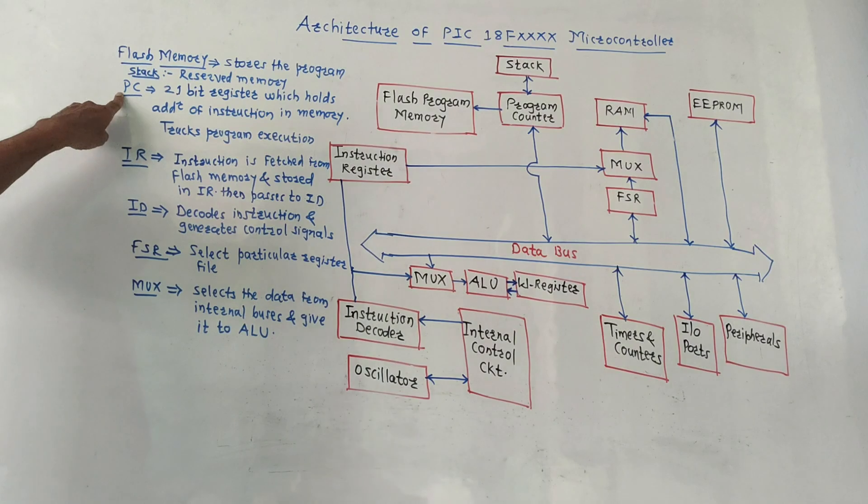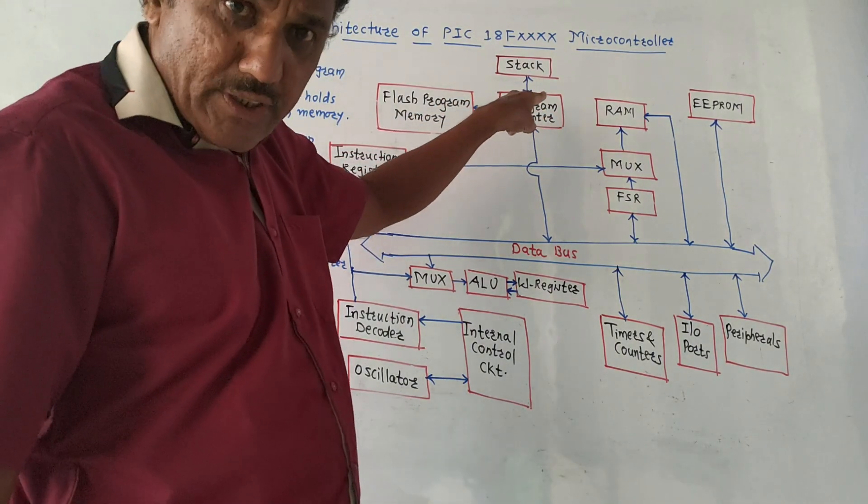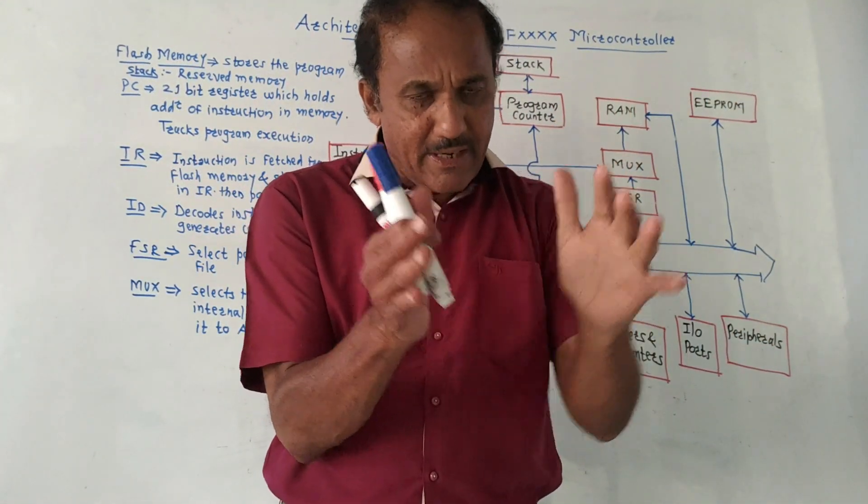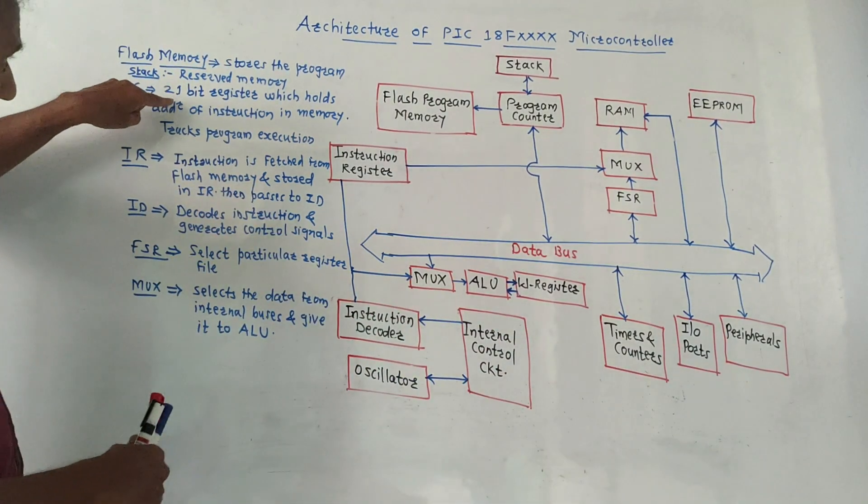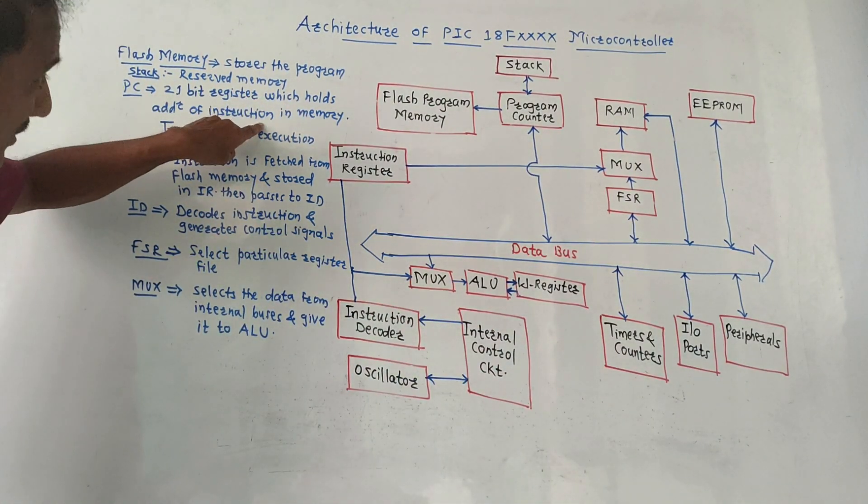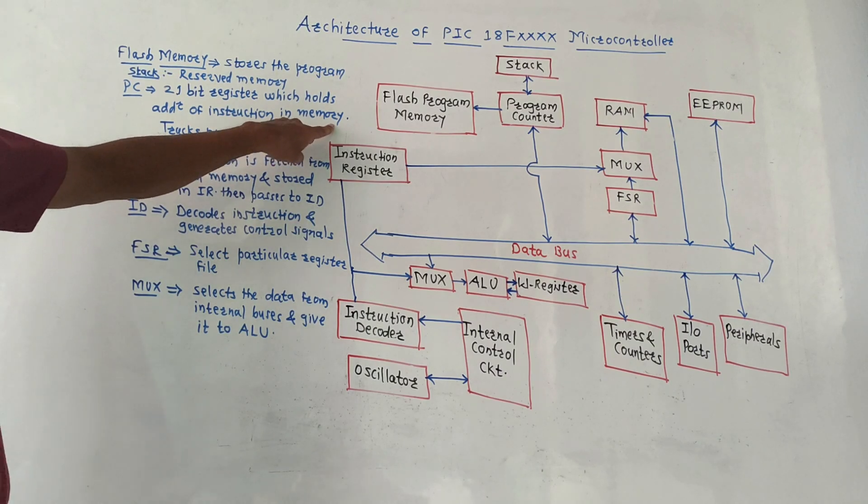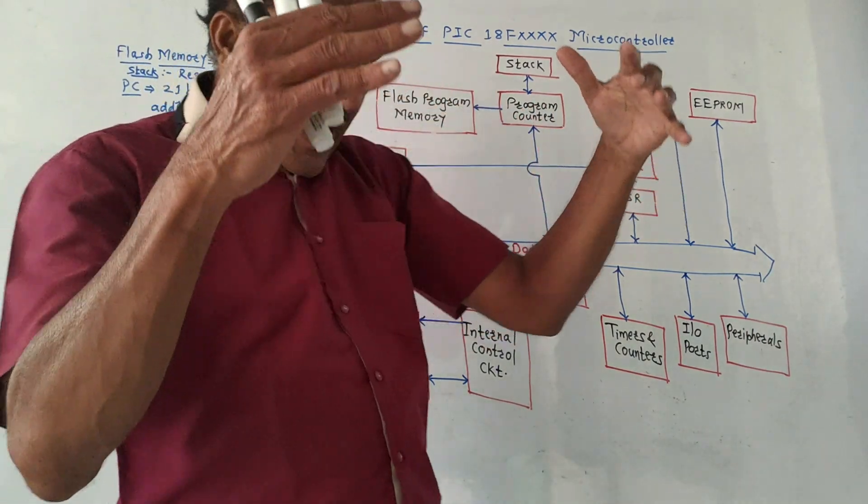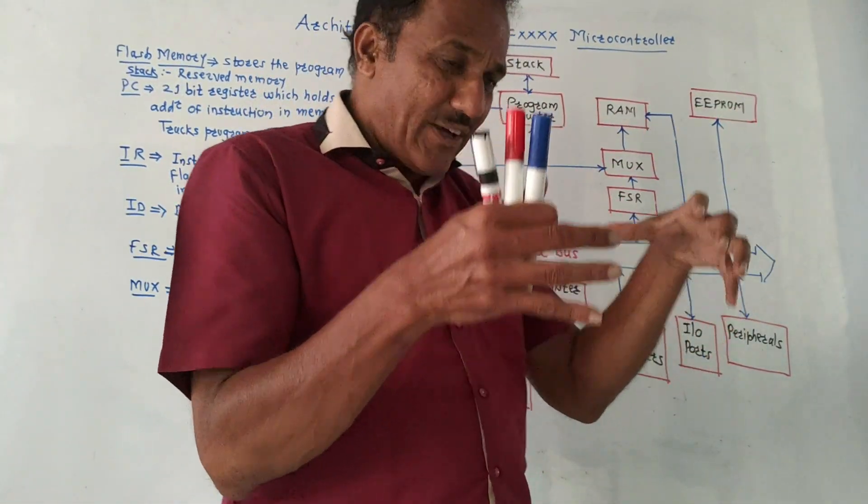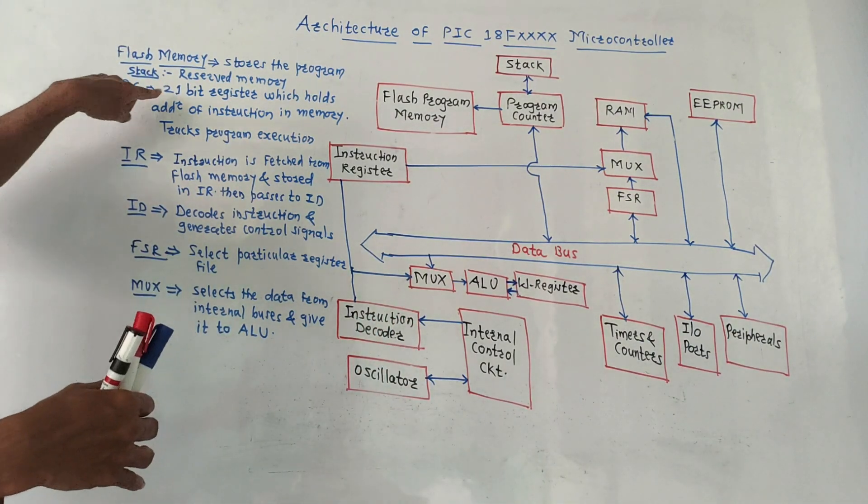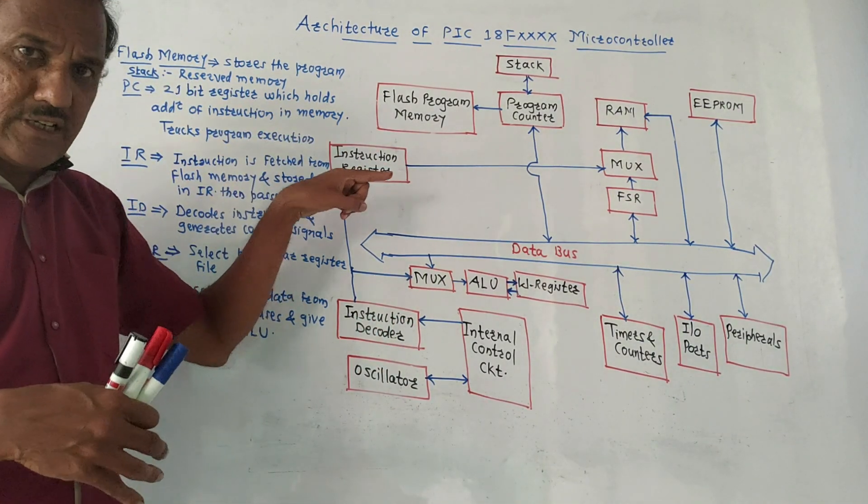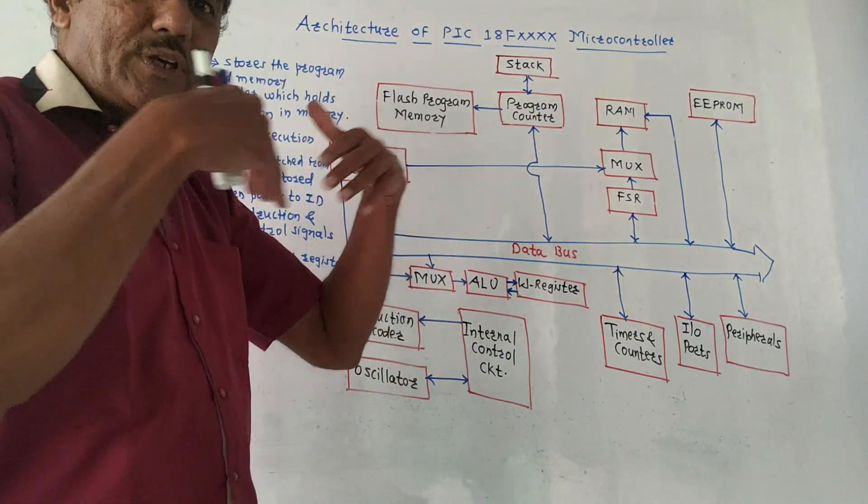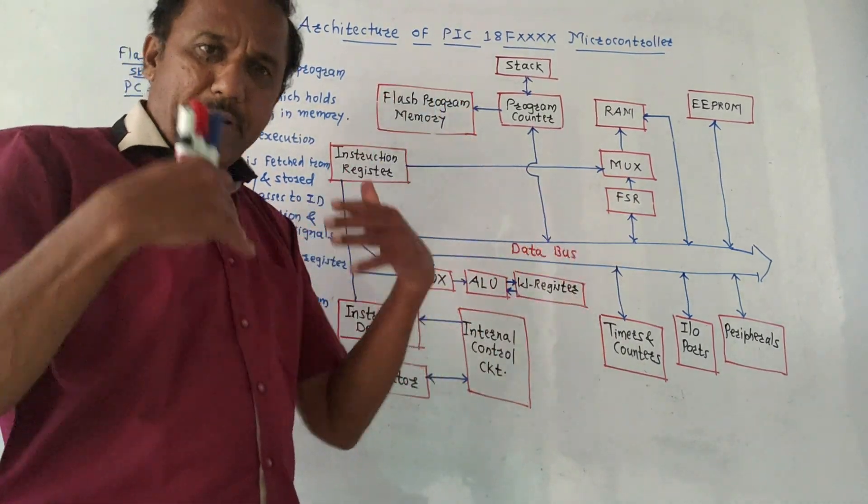Program counter, PC, is basically 21 bit register which holds address of instruction in the memory. It tracks the program execution. The address will be stored in the PC and then we can fetch that information, that data, and pass it through the ALU depending on the program that you want to execute.